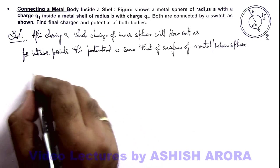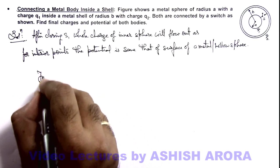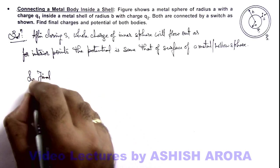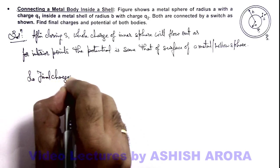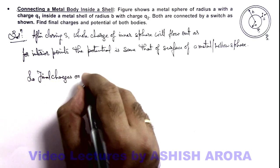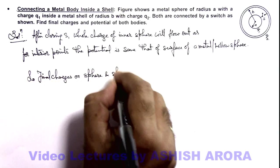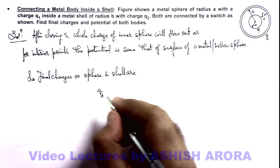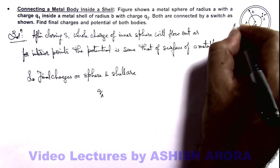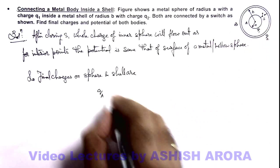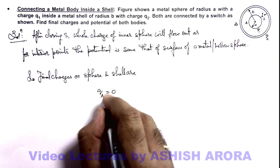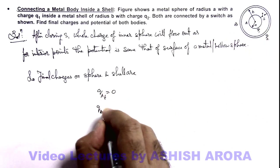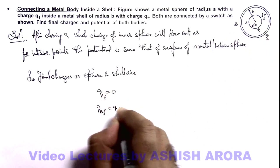So the final charges on sphere and shell - I'm writing sphere as body A and shell as body B - so qA final will be zero, and qB final will be q1 plus q2.